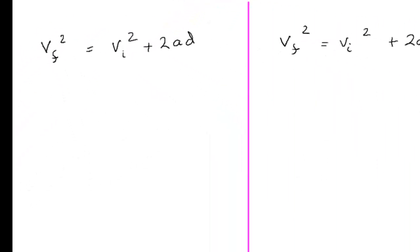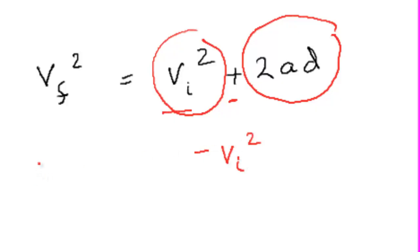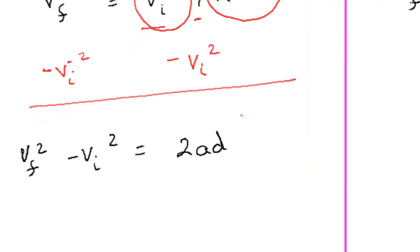First, we're going to solve for A. So we take a look and we see that we have a 2AD being added to a VI. So I want to get rid of the VI squared first before I worry about what's next to the A. So I'm going to subtract VI squared from both sides. Subtracting it from both sides gives me VF squared minus VI squared equals 2AD.